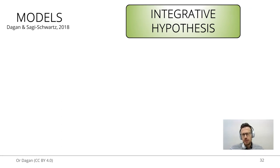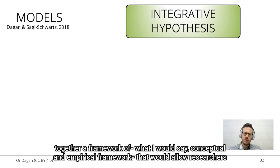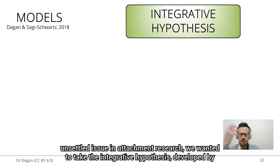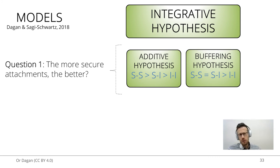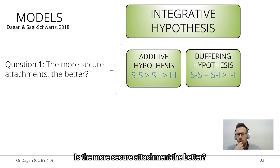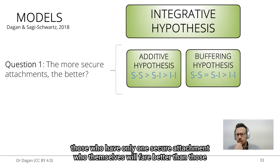What we did in the paper was put together a conceptual and empirical framework that would allow researchers to rely on a priori hypotheses in order to launch new studies on this important but unsettled issue in attachment research. We took the integrative hypothesis developed by Van IJzendoorn and Sagi-Schwartz in 1992 and asked two main questions. The first — a quantitative question: do more secure attachments mean better outcomes? Are infants with two secure attachments to mothers and fathers going to fare better than those with only one secure attachment, who themselves will fare better than those with insecure attachment to both parents?